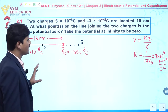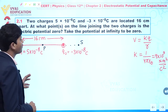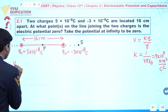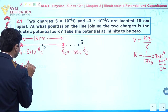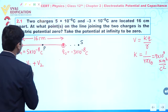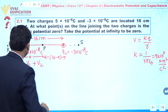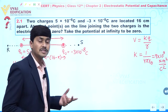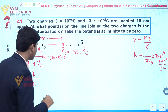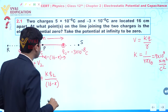Our objective is to find the position where electric potential is zero. If we concentrate on point P, the potential at P equals V1 plus V2 — potential due to both charges. Assuming the distance from Q1 to P is X, the distance from Q2 to P is (16 − X). So we can write: V1 = KQ1/X and V2 = KQ2/(16 − X), giving us the value of Vp.